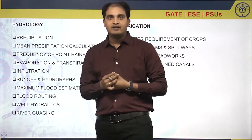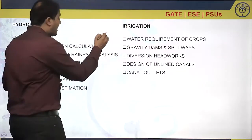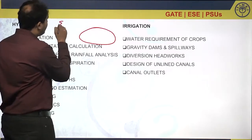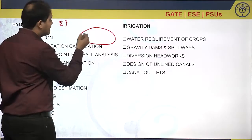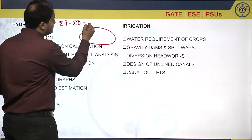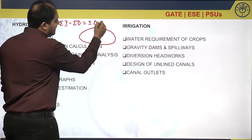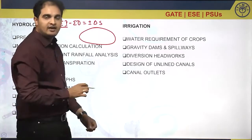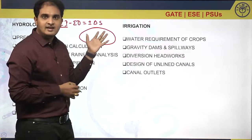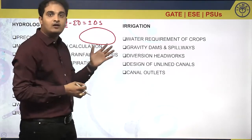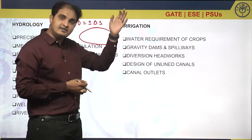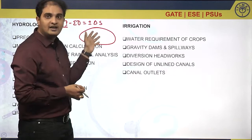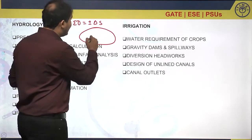Next is the water balance equation. Assuming there is some rainfall falling in a river, lake, or catchment area, the equation is: Sigma i minus Sigma o equals plus or minus delta S. This is an important equation for GATE exam questions on evaporation. Sigma i means all the inputs — rainfall or water coming in from any other stream into the catchment area or lake.